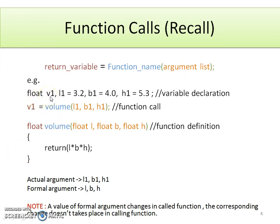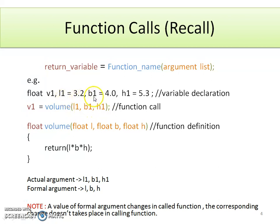Here is an example. Variables are declared which are required for a function call. The function name is 'volume'. In the brackets, we are passing three arguments: L1, b1, h1 — all of type float. The function 'volume' returns a float value as its return type. This is the function call.